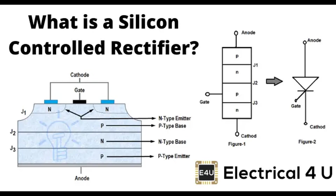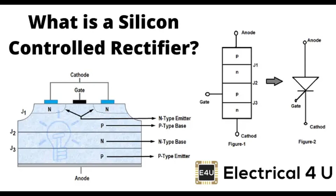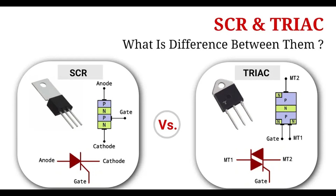By controlling the gate current, SCRs can be used in a variety of applications that require switching and power control. Silicon-controlled rectifiers find extensive use in various applications where controlled switching of high power loads and precise regulation of electrical signals is necessary. Power control applications include light dimmers — SCRs are used in light dimming circuits to control the brightness of incandescent lamps by varying the phase angle of the AC voltage applied to them — and heater control. In industrial applications, SCRs regulate the speed of AC motors by adjusting the voltage or frequency applied to them.